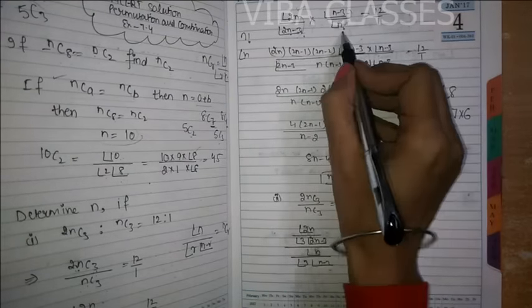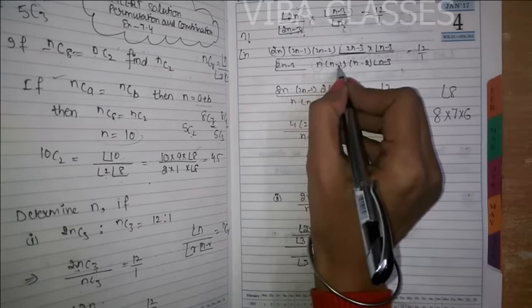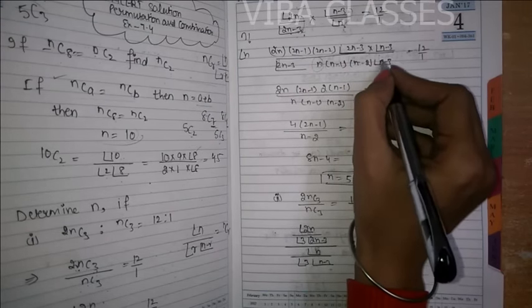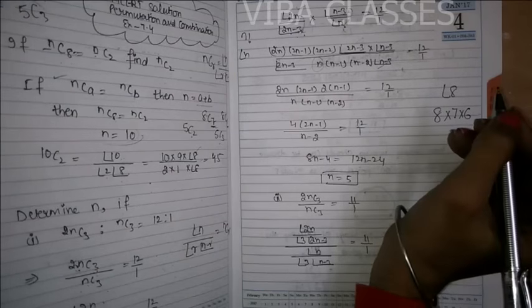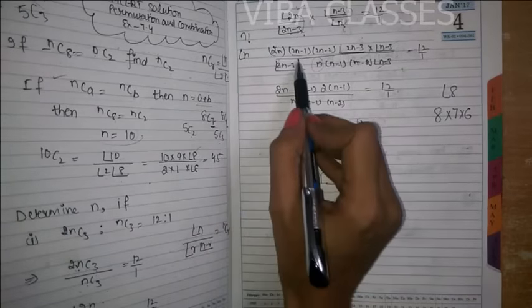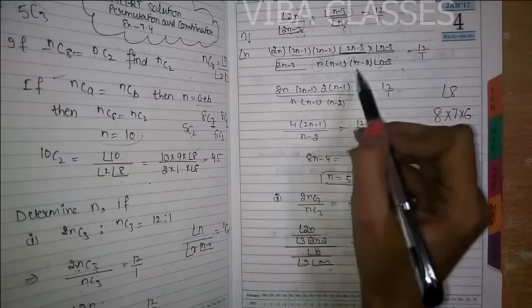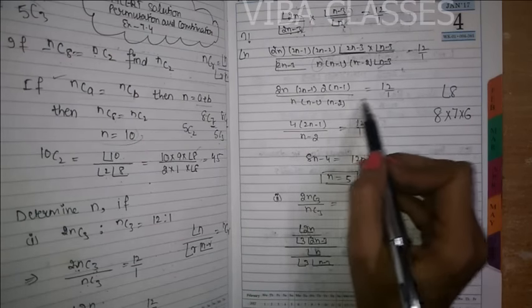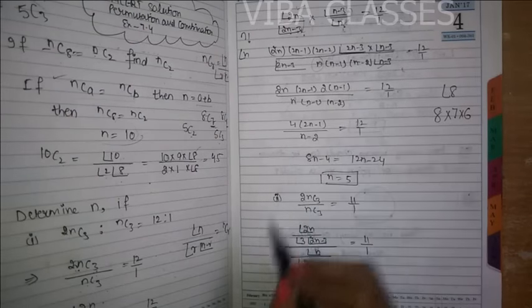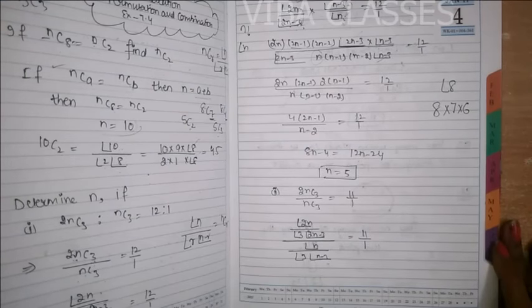When you open factorial 2n, you get 2n, then 2n-1, then 2n-2, then 2n-3, and factorial 2n-3 will cancel out from denominator. For factorial n, you open n, then n-1, then n-2, and factorial n-3 will cancel out. So you are left with 2n into (2n-1) into (2n-2) on top, and n into (n-1) into (n-2) on the bottom, equal to 12 upon 1. The (n-1) terms cancel out, leaving 4 times (2n-1) upon (n-2) equals 12 upon 1.